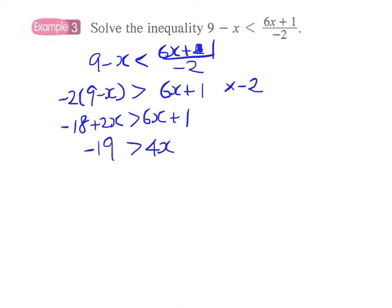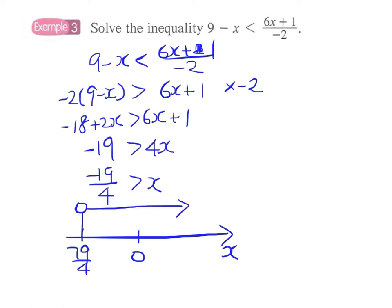So x will be less than minus 19 over 4. And to represent the solution on the number line it will be like this: x is greater than, and since this does not include the equal sign, we draw a small circle here. So this will be our answer.